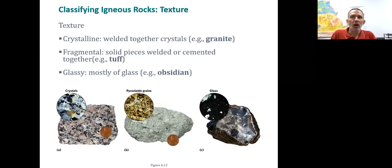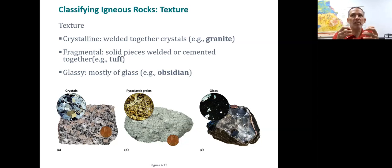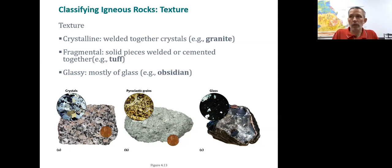When looking at igneous rock texture, it can be crystalline, meaning made up of individual interlocking crystals — large or small. If materials are shot out and pieces are stacked on one another, we call that fragmental. A good example of fragmental texture is tuff. Then we have glass, which we've mentioned as an amorphous solid — it's cooled so quickly that there is no internal crystalline structure, so it's not truly a mineral.